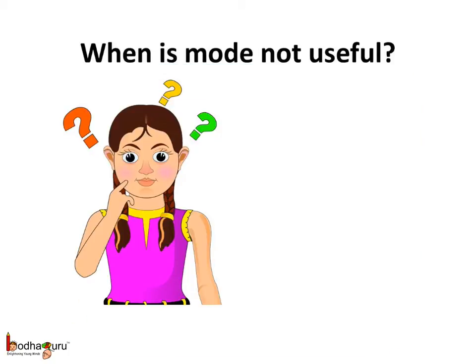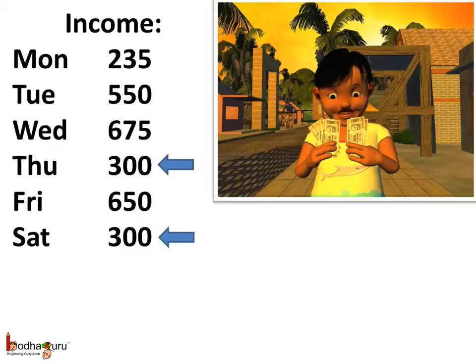When is the mode not useful or when doesn't it give much information about given data? The mode isn't useful when values don't repeat much, or when repetition is very low compared to the total number of values. Here is the data of income of Keshav for 6 days — only 300 is repeated, so the mode is 300. But the mode value 300 doesn't give the right idea about his daily income as most days he earned much more than 300. In such cases, we use the mode only when the most common value appears much more frequently than other values. Here, finding the arithmetic mean would represent his daily income better.